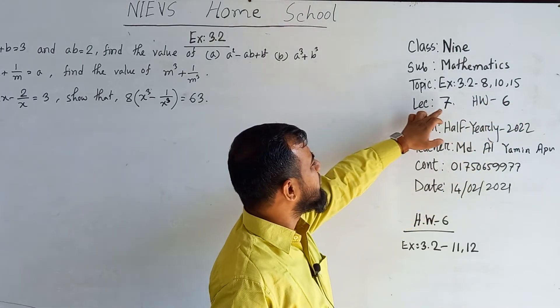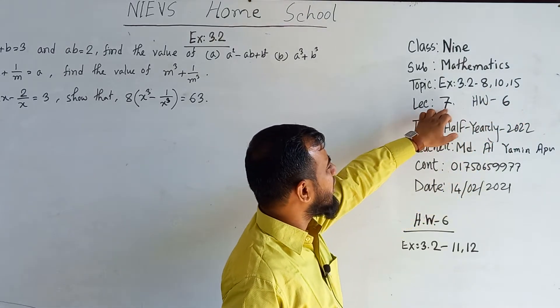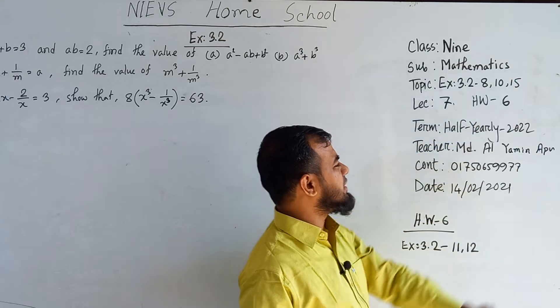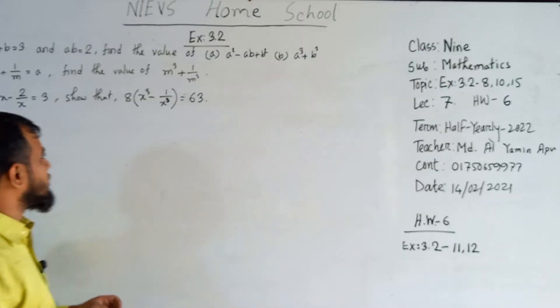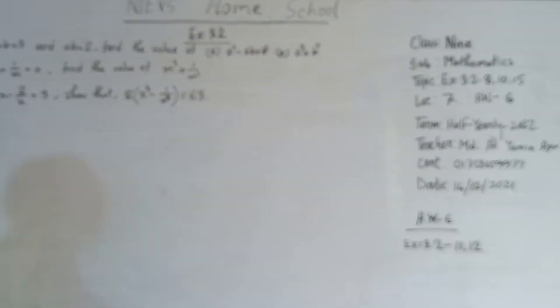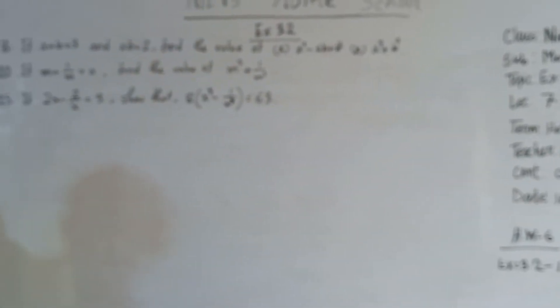Your lecture number is 7 and you have a homework — your homework number is 6. So have a look at the questions here from exercise 3.2, question number 8 at first.